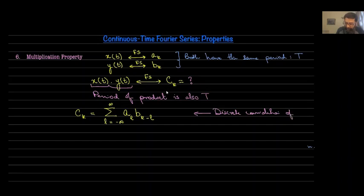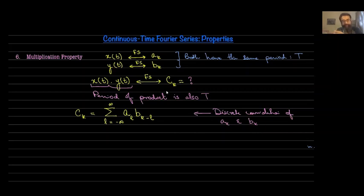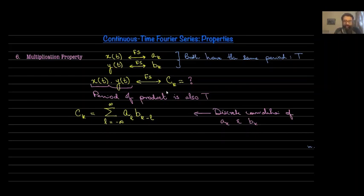This is the discrete convolution of A_k and B_k. What this really implies is: if you have two time-domain signals X and Y, both periodic, and you multiply them together in the time domain, the result in the Fourier domain is that the Fourier series coefficients of these two signals are convolved together. So multiplication in the time domain is equal to convolution in the Fourier domain. This is a theme that is going to recur over and over again as we move further through the course.